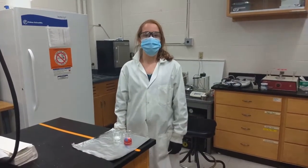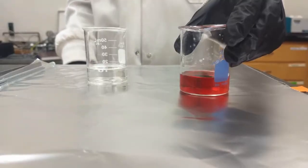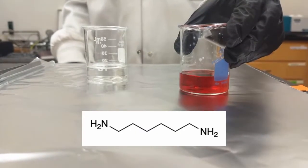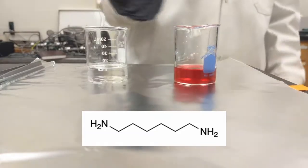In our case, we will be using hexane and water as our immiscible liquids. We have the diamine monomer that's dissolved in water. We've dyed this red so that you can see the difference.